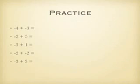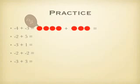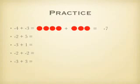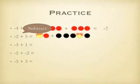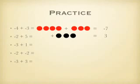So negative 4 plus negative 3 equals — I'm going to add them — so I get negative 7. Now negative 2 plus 5, that's negative 2 plus positive 5. In this case, I'm going to subtract because some of the positives and negatives are going to cancel, so I'm going to be left with 3 positives.